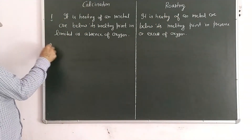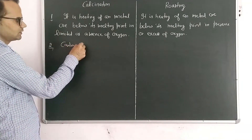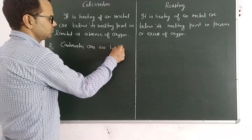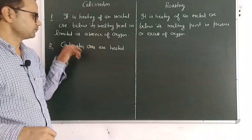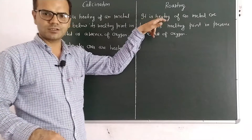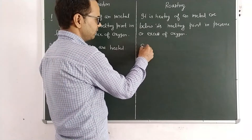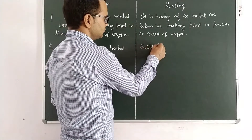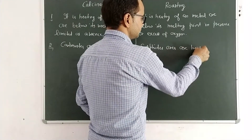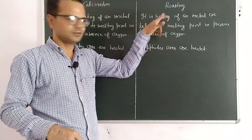A second difference is the type of ore used. In calcination, carbonate ores are heated — calcination is applicable to metal carbonates. In roasting, sulphide ores are heated — roasting is applicable for sulphide ores.